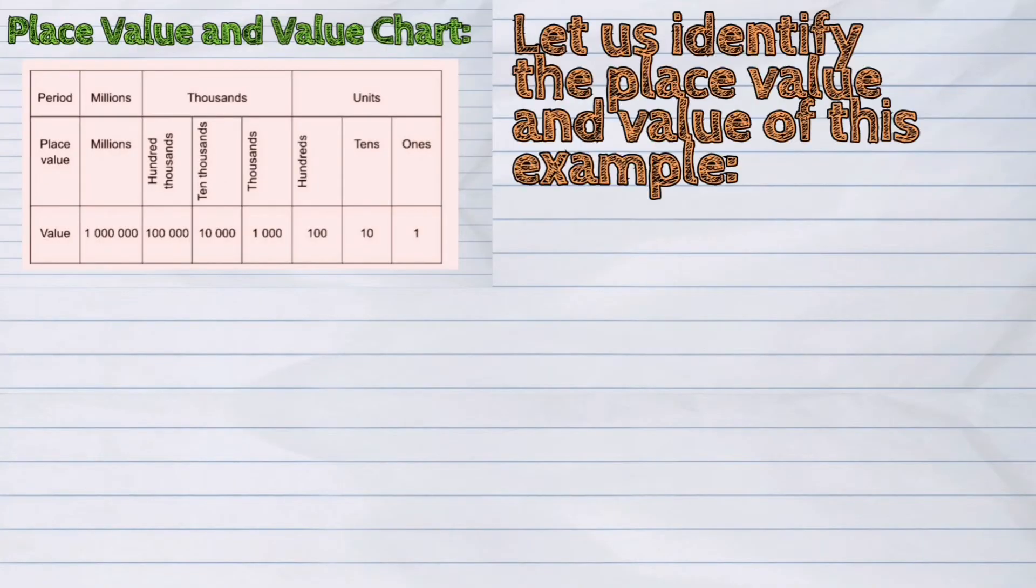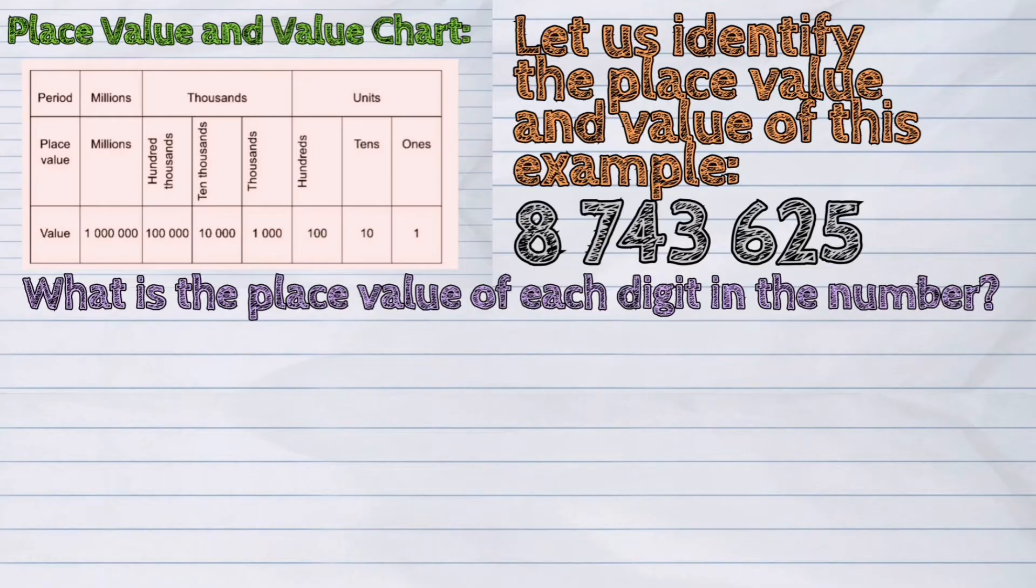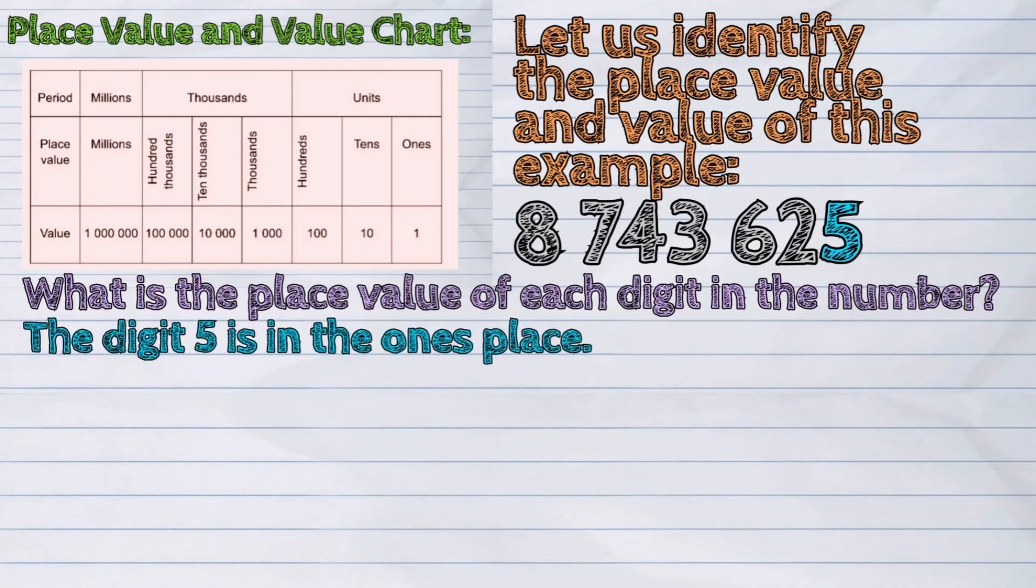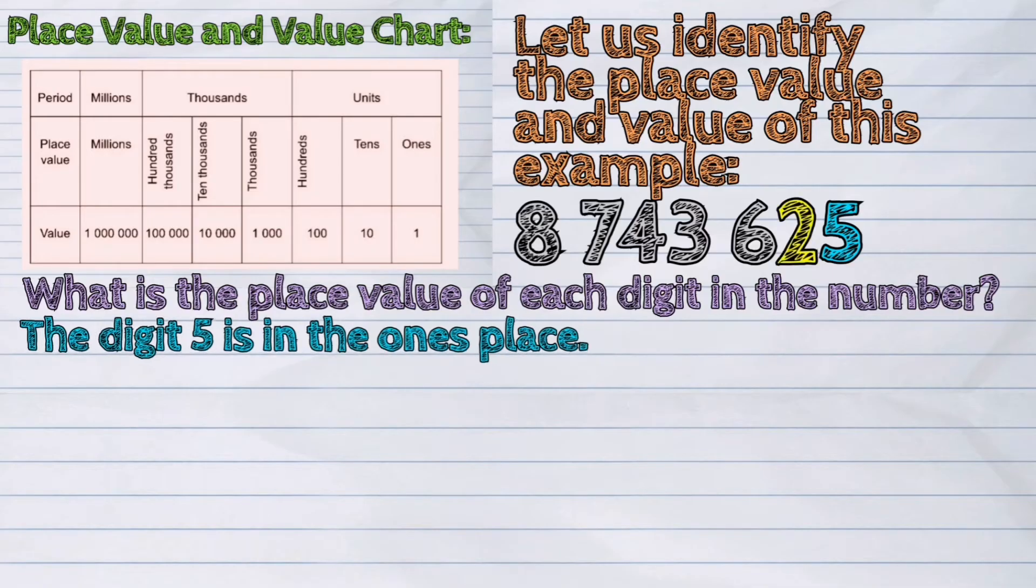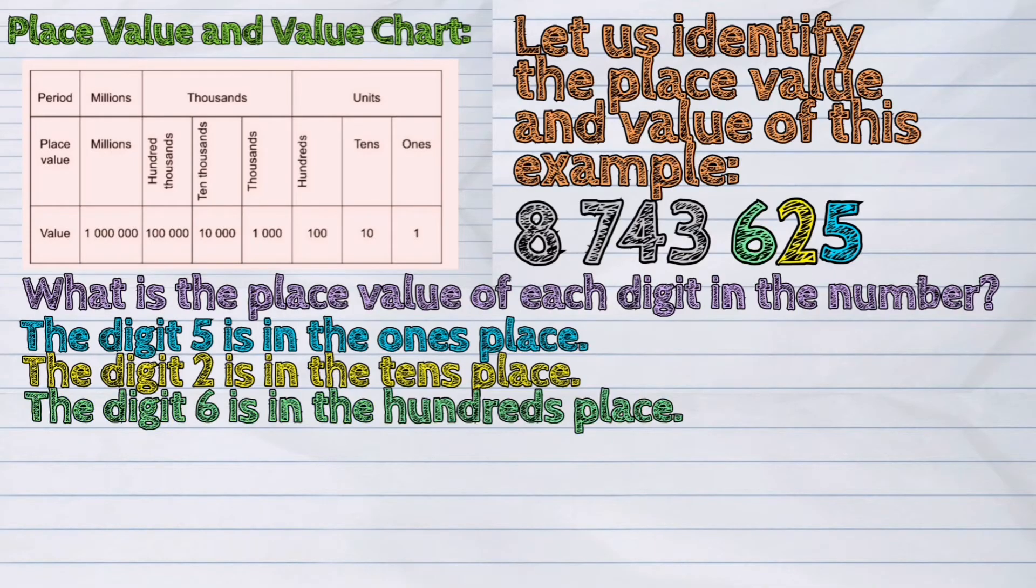Now, let us identify the place value and value of this example. First, what is the place value of each digit in the number? The digit five is in the ones place. The digit two is in the tens place. The digit six is in the hundreds place.